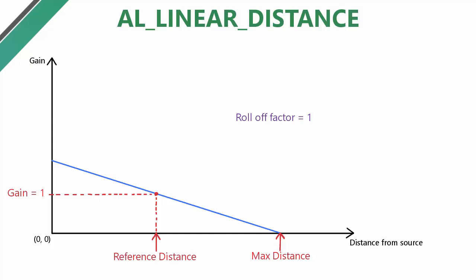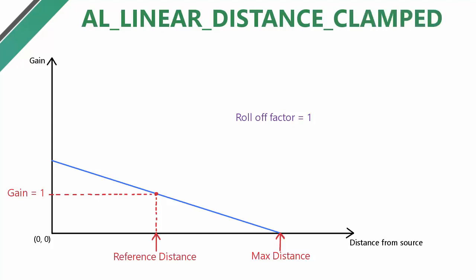The only difference in the clamped version of this model is that the gain for distances below the reference distance is clamped. If you'd like to find out more about these distance attenuation models and see the exact formulas that they're using, then you can check out section 3.4 of the OpenAL specification, which I've linked in the description below.